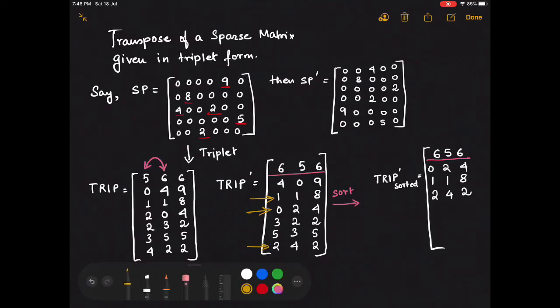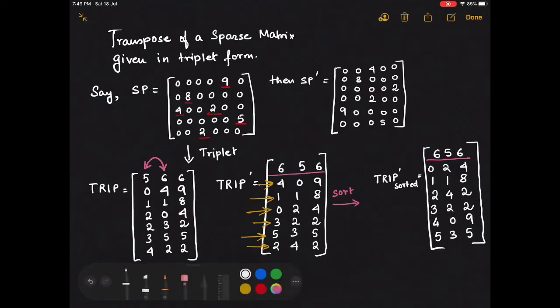The rest of the rows are also copied into TRIP dash sorted accordingly. Here if two rows had same value as a row number, in that case we would have considered the column numbers of the entries to sort them into TRIP sorted. Finally we get the TRIP dash sorted as per our requirement.